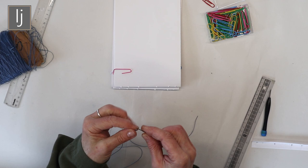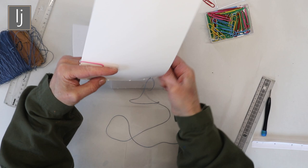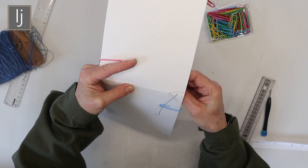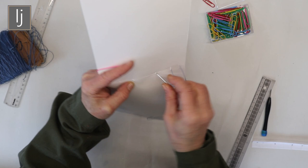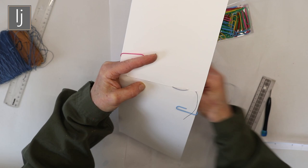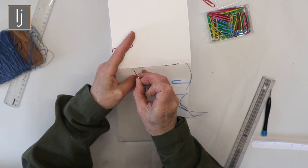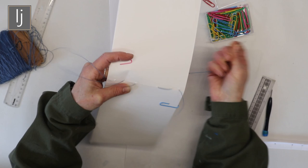Thread your needle, begin at the end, go in leaving a length enough to knot, come out and just do a running stitch across your signatures.